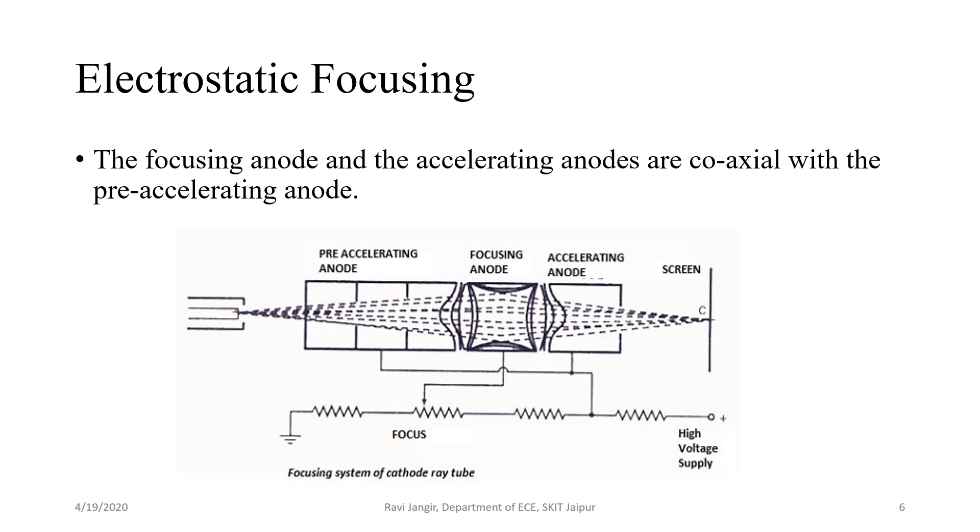The equipotential surfaces thus form a double concave lens. The electron beam entering the field at angles other than the normal to the equipotential surfaces will be deflected towards the normal and the beam is thus focused towards the center of the tube axis. By changing the voltage of the focusing anode, the refractive index of the electron lens can be changed. And therefore focal point of the beam can also be changed. The change in voltage is brought about by changing the setting of a potentiometer. This control is brought to the front panel of the CRO and is marked focus.